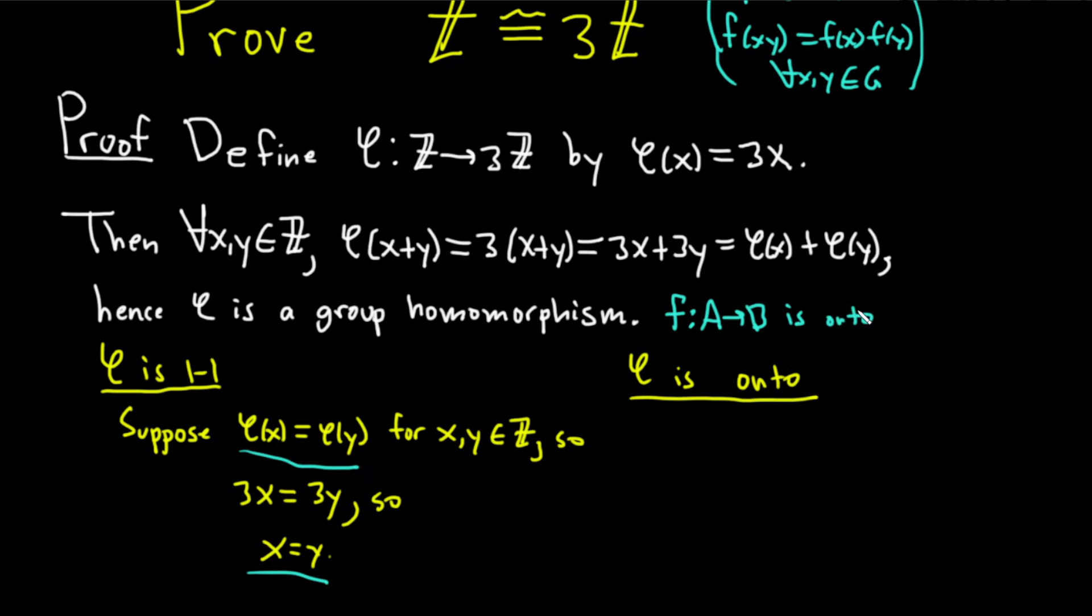This definition means for all y in b, there exists some x in a such that f of x is equal to y. So that's the definition of onto. You just have to know it cold and know what it means intuitively. With that, you can pretty much show most things are onto. It's usually not too difficult.